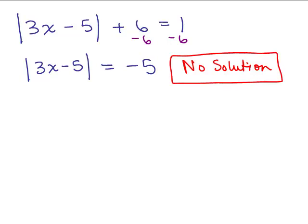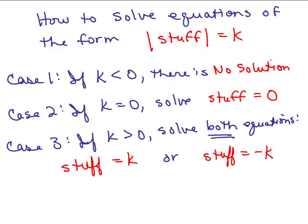Let's review the different possibilities. When solving equations of the form absolute value of something equals k, there are three cases: if k is negative, there's no solution — as in the problem we just did; if k equals 0, there's one equation to solve; and if k is greater than 0, that was the first example, and you break it into two separate equations.